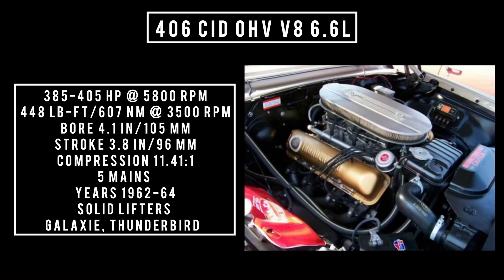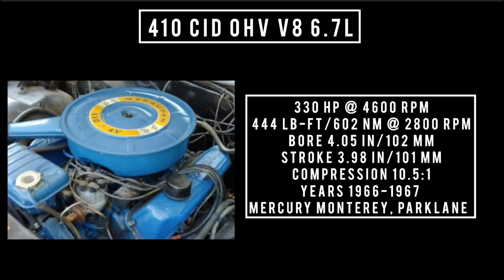Introduced in 1966 and called the Marauder V8: the 410 cubic inch displacement overhead valve V8, 6.7 liters. Good for 330 horsepower at 4,600 RPM, 444 pound-feet or 602 newton meters at 2,800 RPM, with a bore of 4.05 inches and a stroke of 3.98 inches. Compression was 10.5 to 1. Used between 1966 and 1967, found in Mercury products such as the Monterey and Park Lane. Don't confuse this with the 410 cubic inch MEL engine — nothing interchanges between these two; they are totally different engines from different engine families.